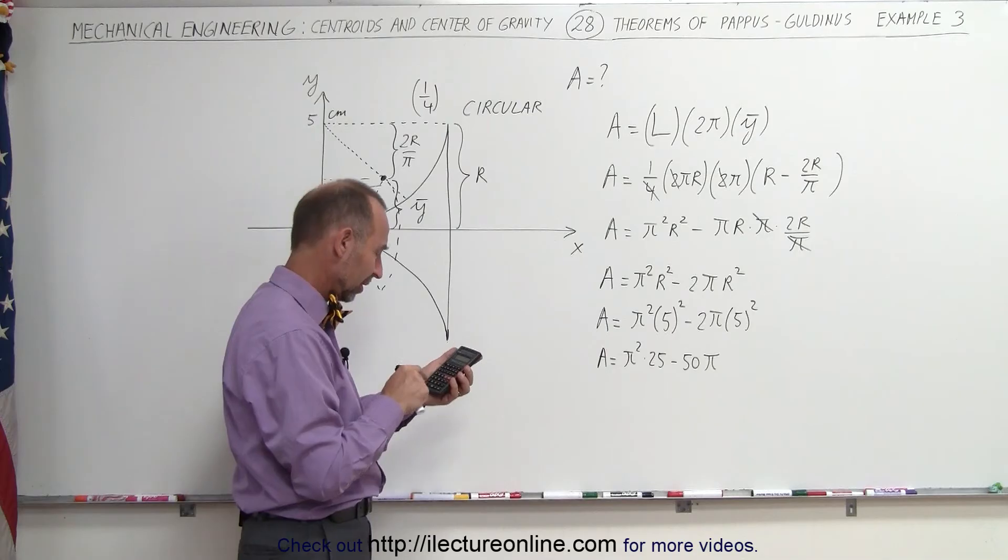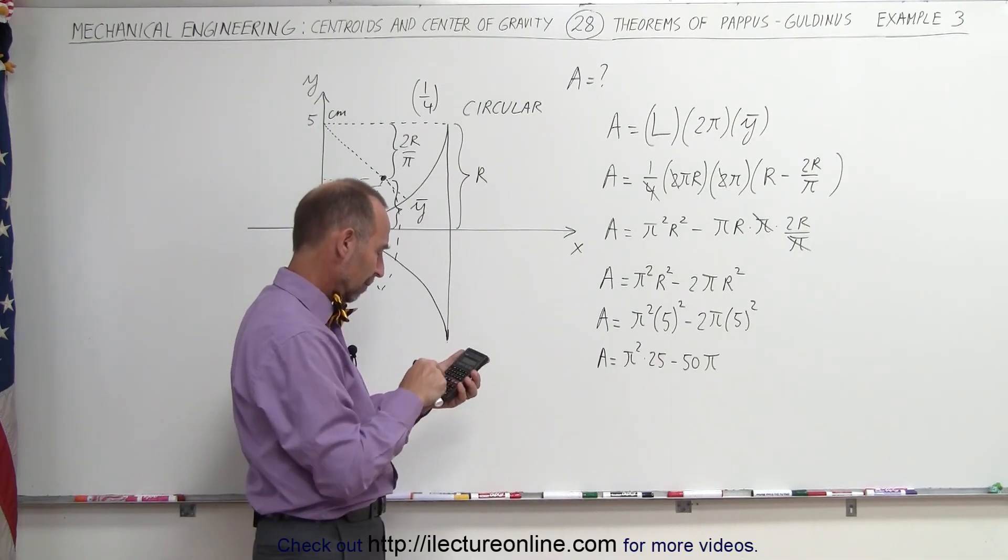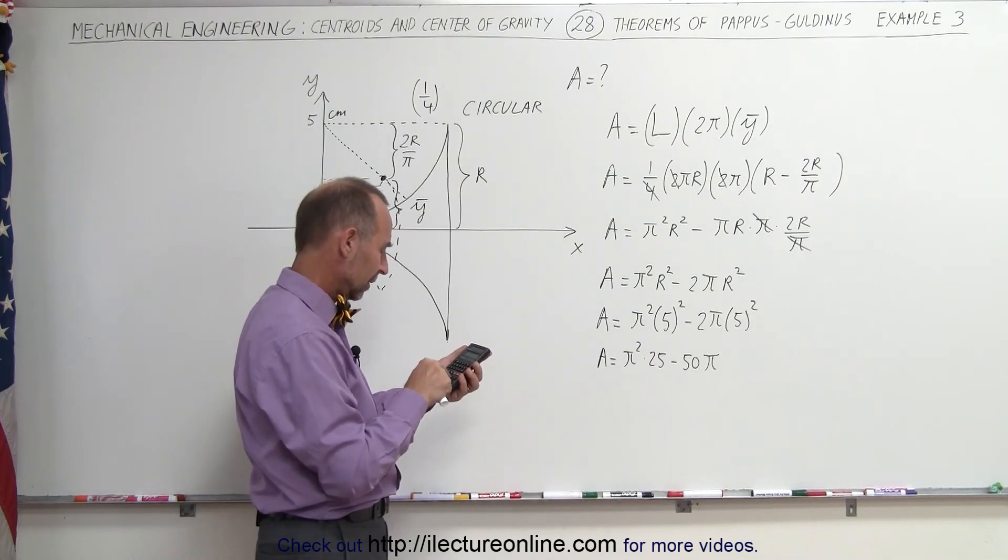So we get π² times 25 minus 50 times π equals... Let me do that again just to make sure I got that right. π² times 25.